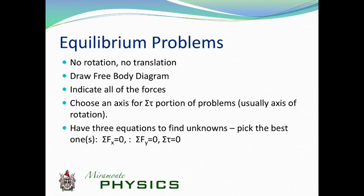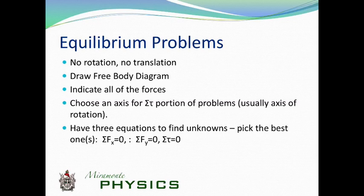When dealing with equilibrium problems, there's no rotation and no translation. Start by drawing a free body diagram, sketching and indicating all forces acting. Then choose an axis for your torque calculation — typically where the object is hinged, pinned, or rotates around. Then use three equations to find unknowns: sum of forces in x equals zero, sum of forces in y equals zero, and sum of torques equals zero. You might not need all three, but you'll probably need two.